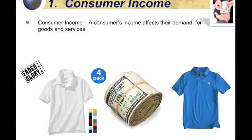Over the years as I have generated more income in my life, I have been able to attain things that were nicer. On the screen we're looking at two products: on the right, the shirt from the brand Express, something I enjoy spending my money on. Over on the left is a Walmart brand polo called Faded Glory. As my income increases, I will tend to buy more name brand and less generic brand.